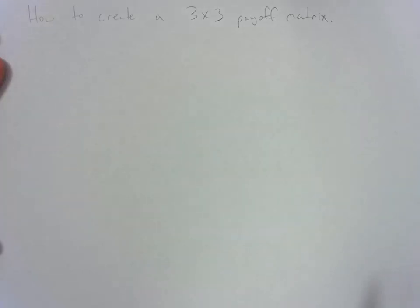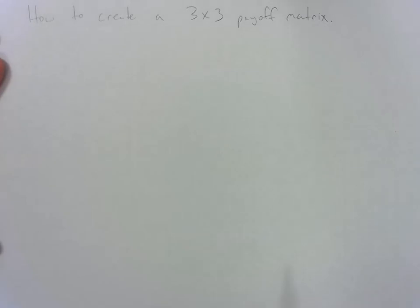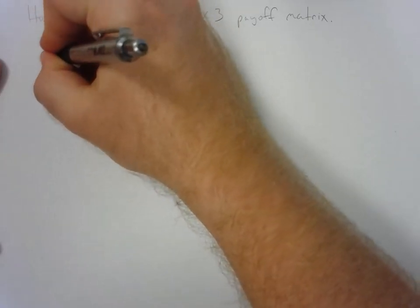All right, this video is going to go over how to create a 3x3 payoff matrix. This is probably for your game theory or your oligopoly chapter. The trick here is that we're going to start off with two players and they will each have three choices.